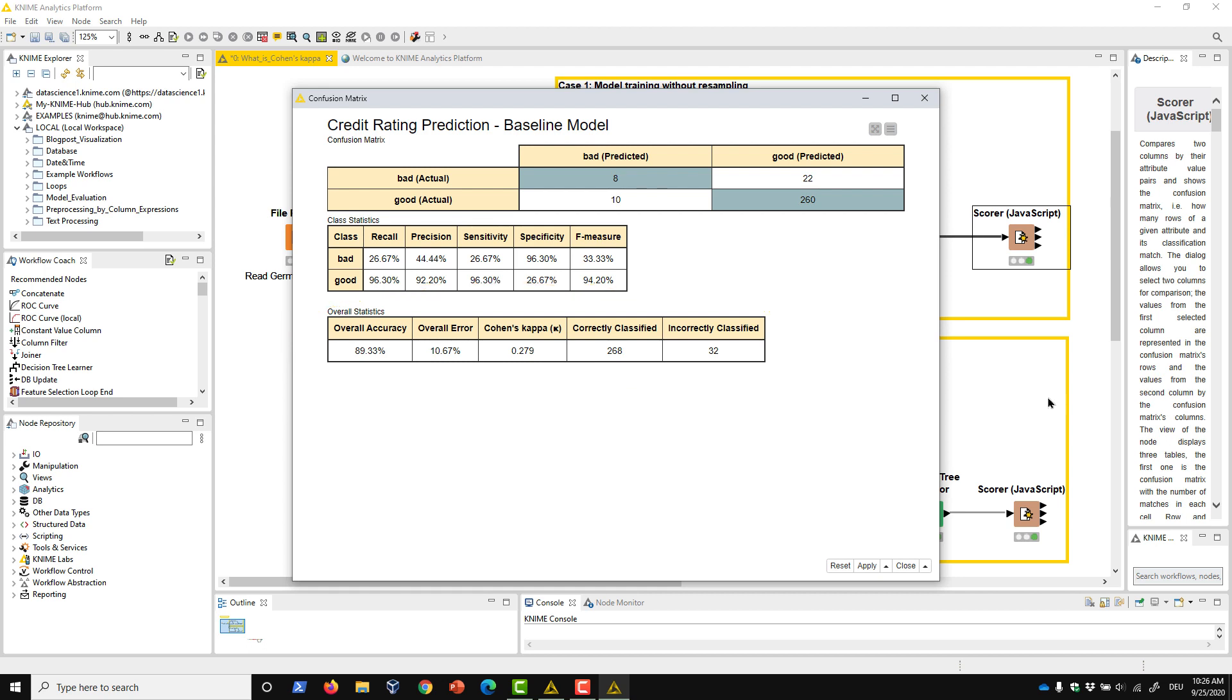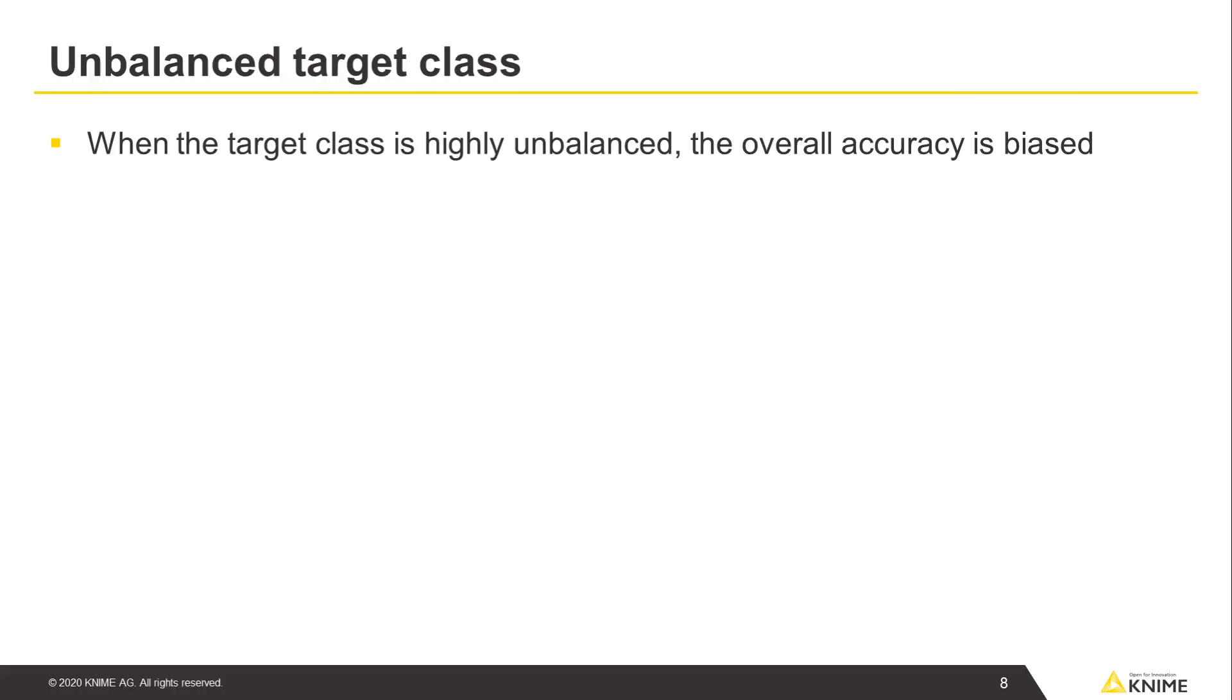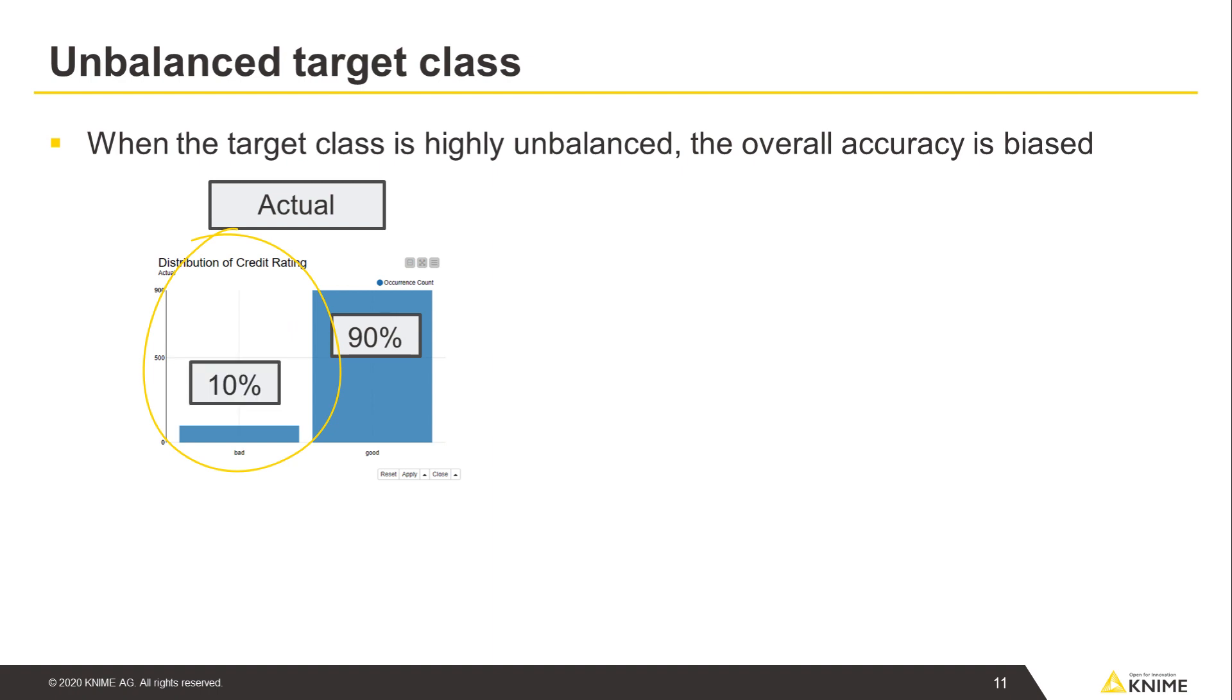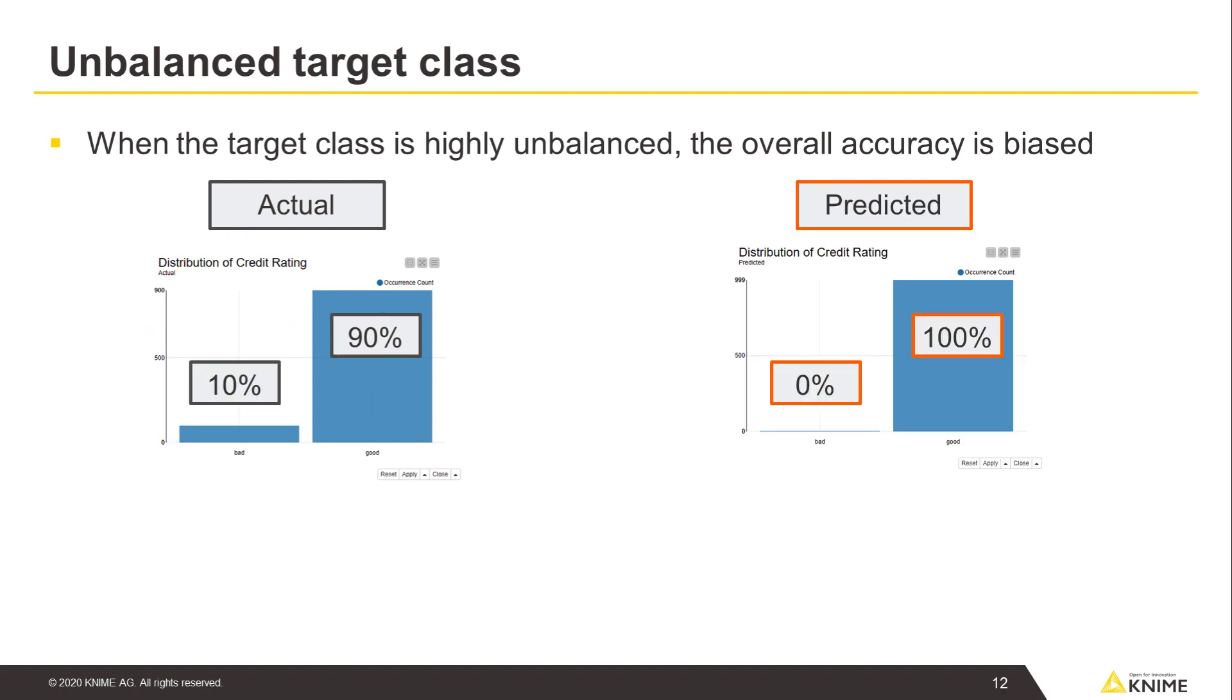But why do we need both overall accuracy and Cohen's kappa? When the target class is highly unbalanced, the overall accuracy is biased. For example, when customers with a good credit rating represent 90% of the data, and the customers with a bad rating only make up the remaining 10%, a classification model that predicts the rating of all customers as good would reach an overall accuracy as high as 90%.